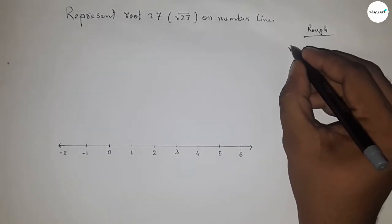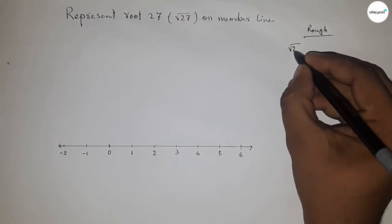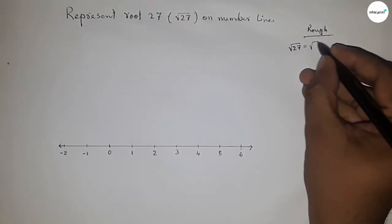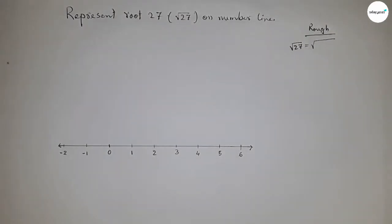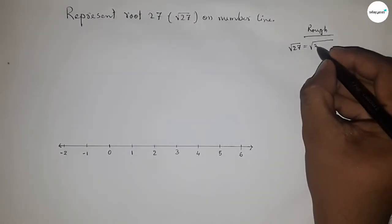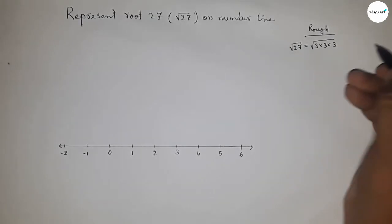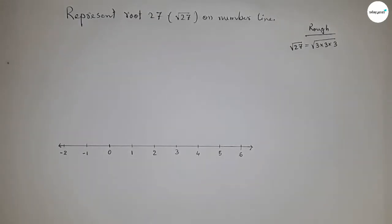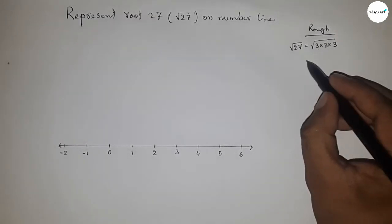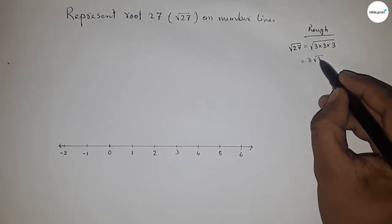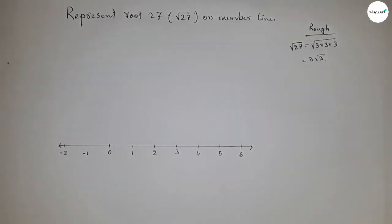Now, roughly discussing the calculation: root 27 equals root of three times three times three, which simplifies to three root three.